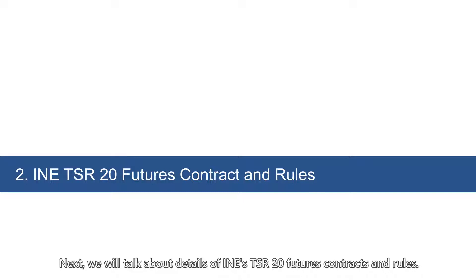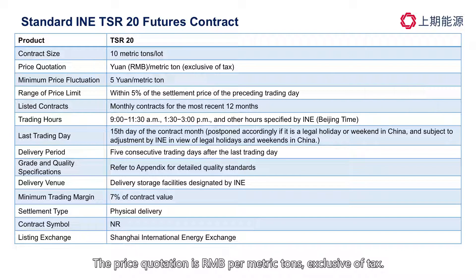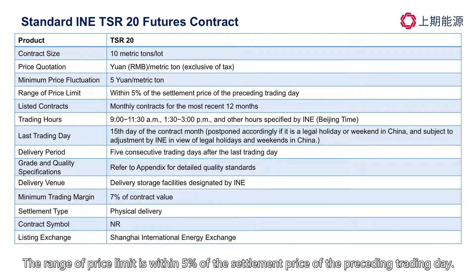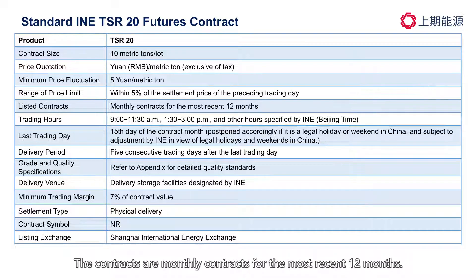Next, we will talk about details of INE's TSR20 futures contract and rules. The contract size is 10 metric tons per lot. The price quotation is RMB per metric ton, exclusive of tax. The minimum price fluctuation is 5 yuan per metric ton. The range of price limit is within 5% of the settlement price of the preceding trading day, though currently in practice the price limit is within 6%. The contracts are monthly contracts for the most recent 12 months.